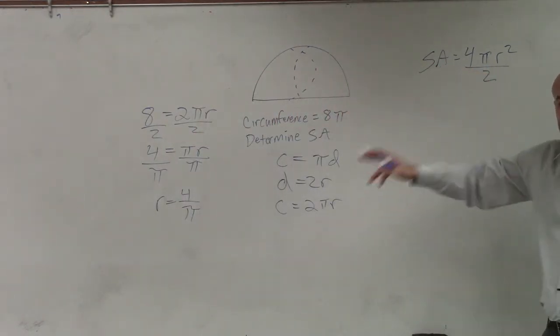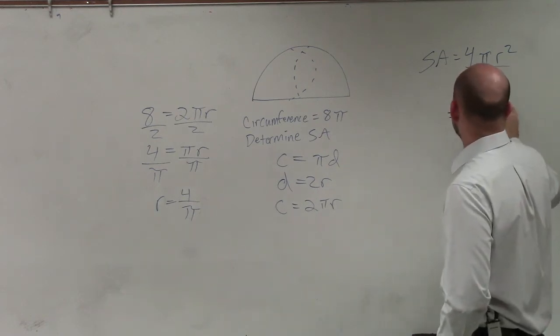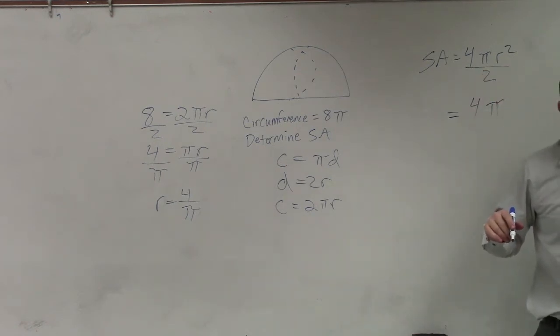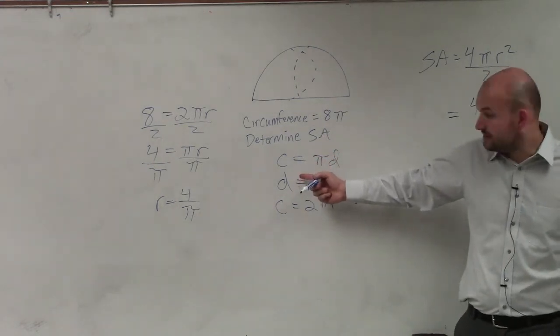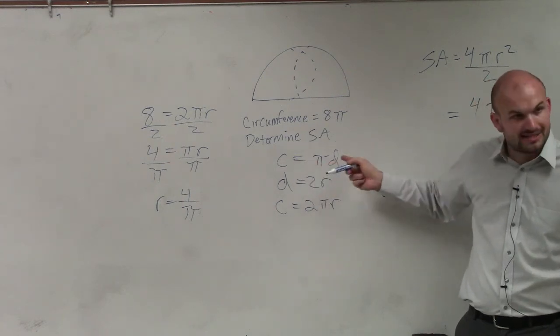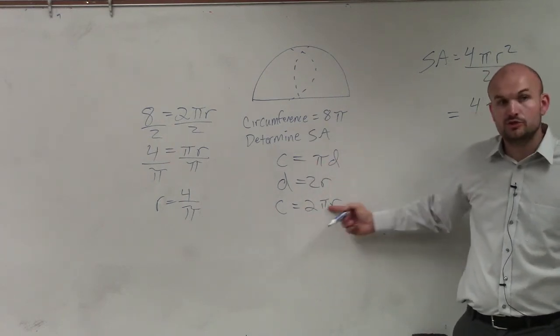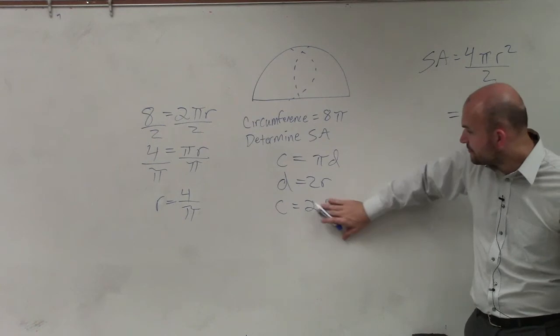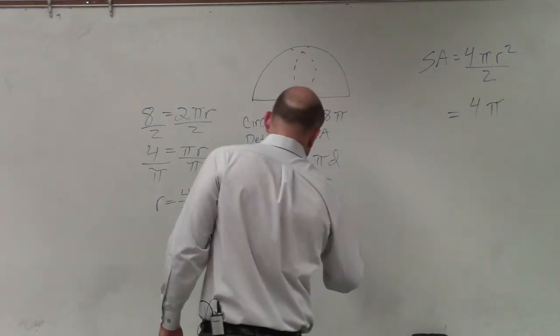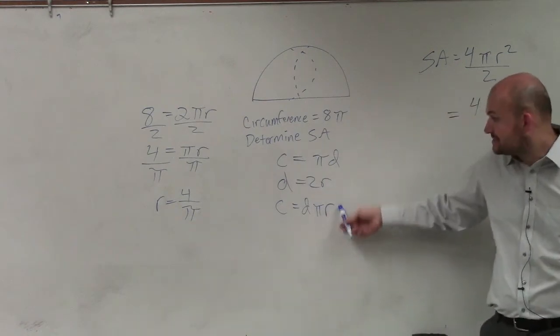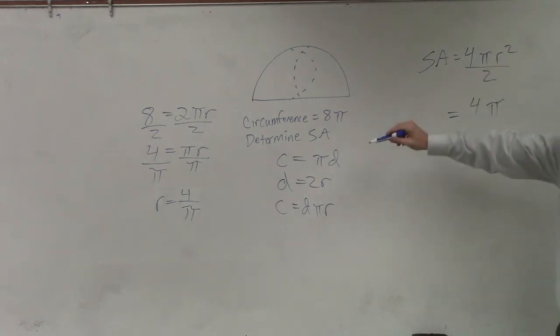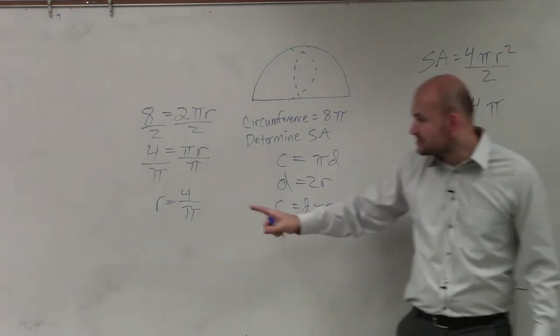So now, I'm going to plug that into here. So I have surface area is 4 times π. What did I lose you? This is given, you guys should know this, circumference equals π times diameter, or circumference is 2 times π times radius, because the diameter is 2 times the radius. If you want me to write it like this, I can.